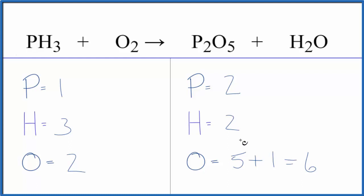To balance it, why don't we leave the hydrogens and oxygens to last? Let's start with the phosphorus. We could put a 2 in front of the PH₃. 1 times 2, that'll give us two phosphorus atoms. Those are balanced.